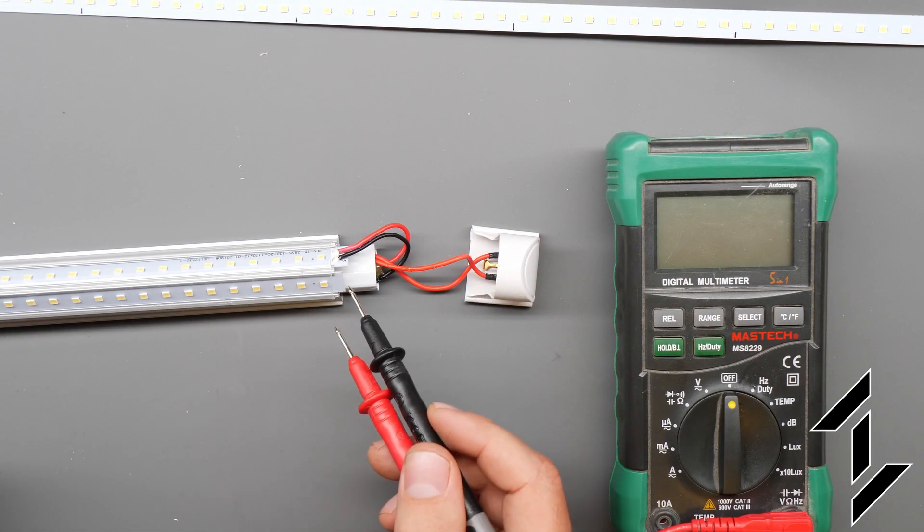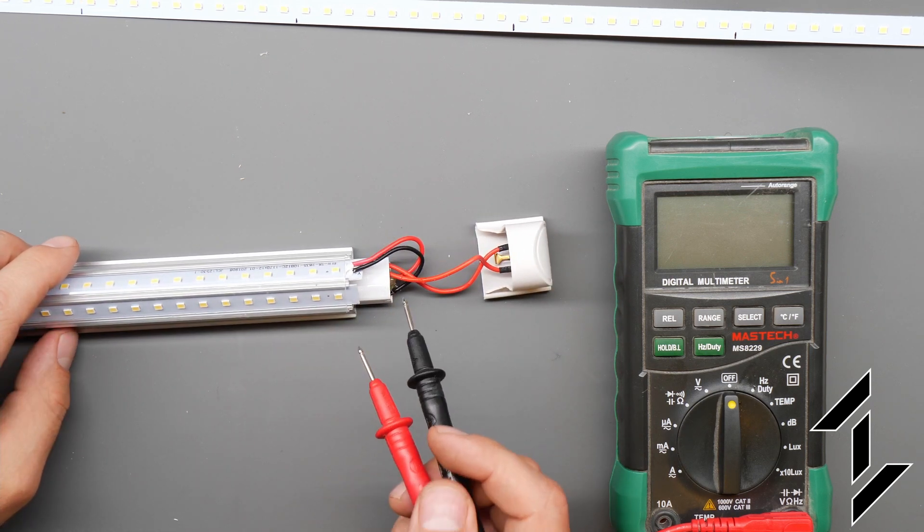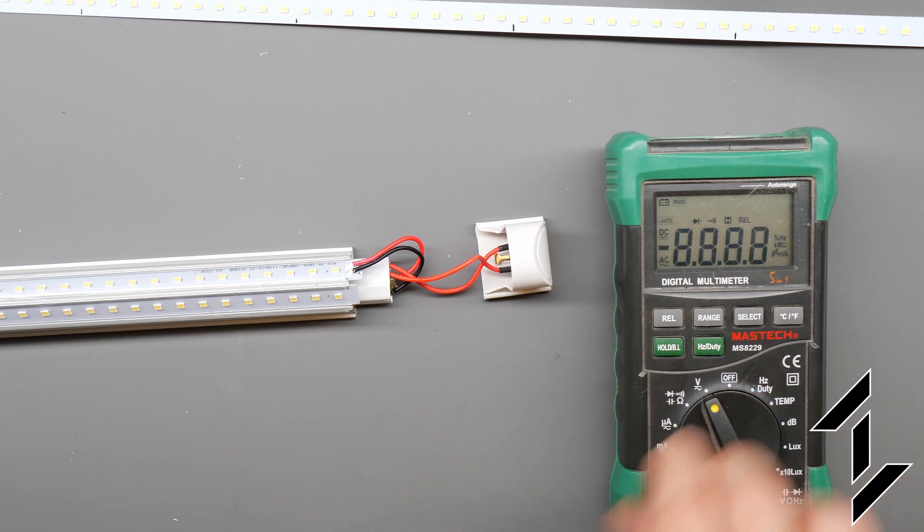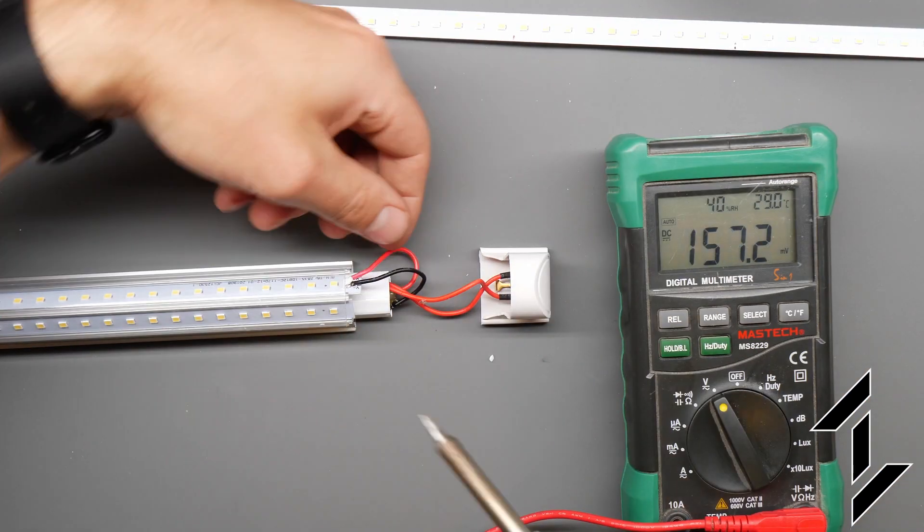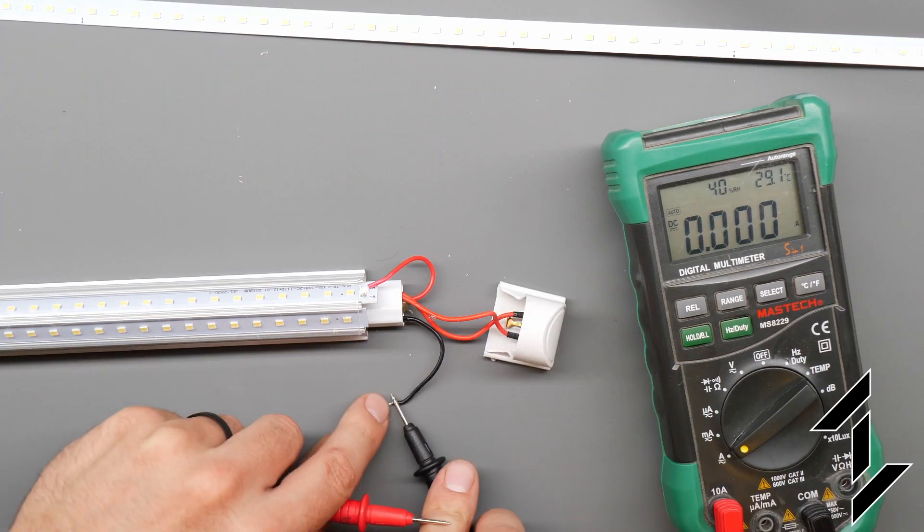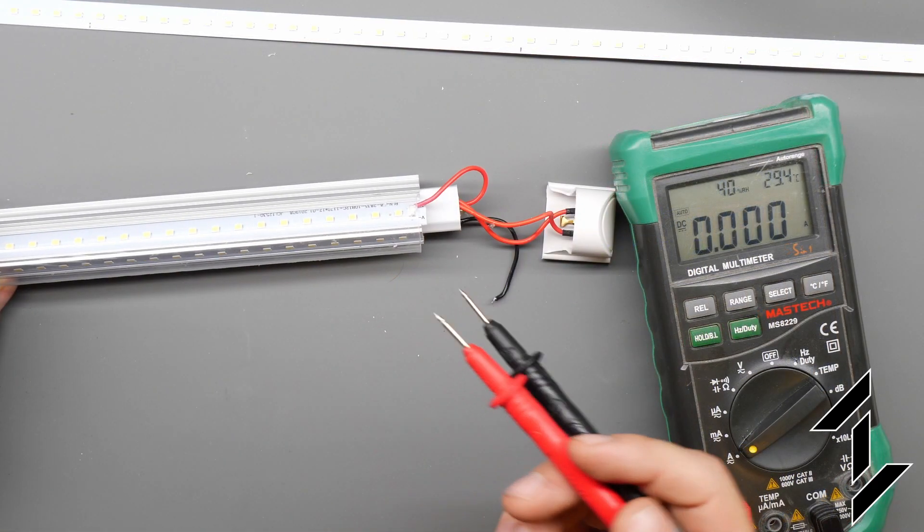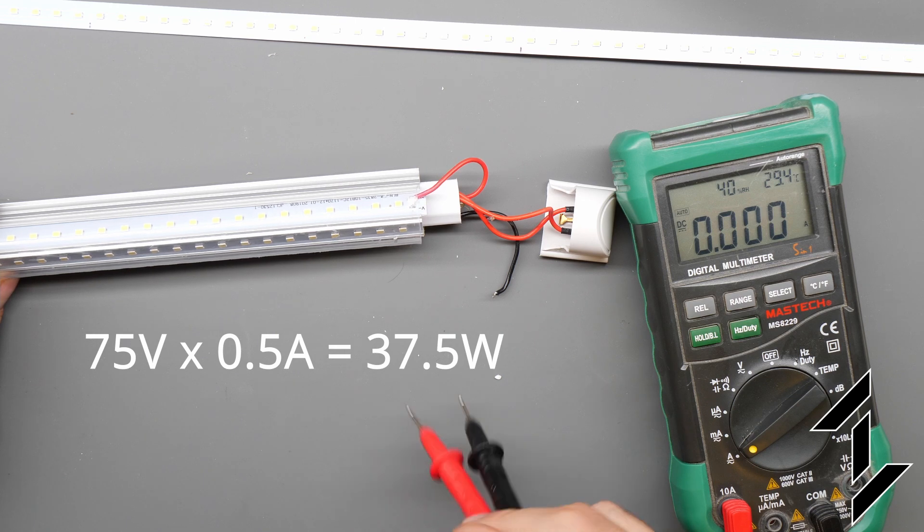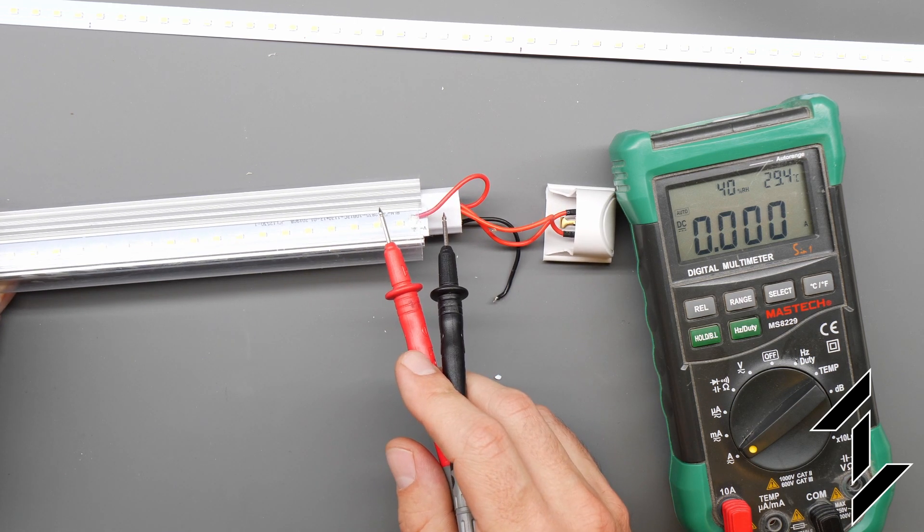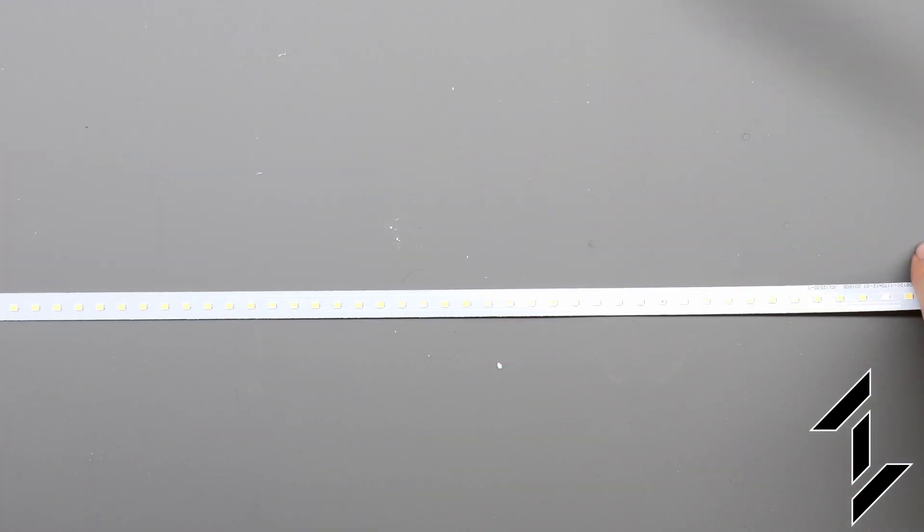Now before we test our hypothesis on why these are failing we're going to take a working strip and get the voltage and current off of that just so we have working condition values. So for voltage it looks like we're around 75 volts. And it looks like we're pulling just about half an amp. Now doing some quick math 75 volts times half an amp is 37.5 watts. Now these are supposed to be 40 watt fixtures so we're in the ballpark of what we expect.